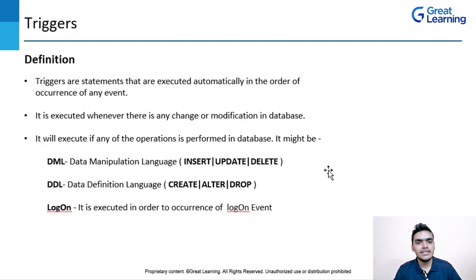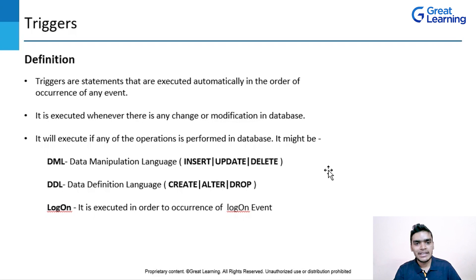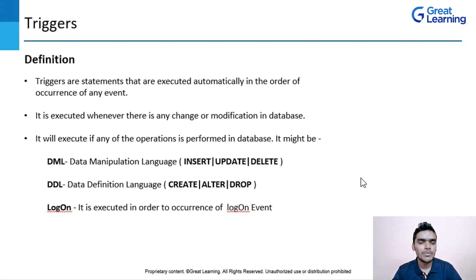DDL stands for Data Definition Language. It defines the database schema. If you want to create a table, you use DDL. It is also used to CREATE, ALTER, or DROP any table. The last trigger type is for logon events — when performing database operations such as logon, logoff, or shutdown, the trigger will be executed.